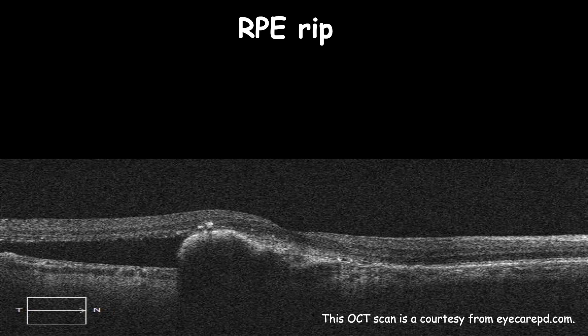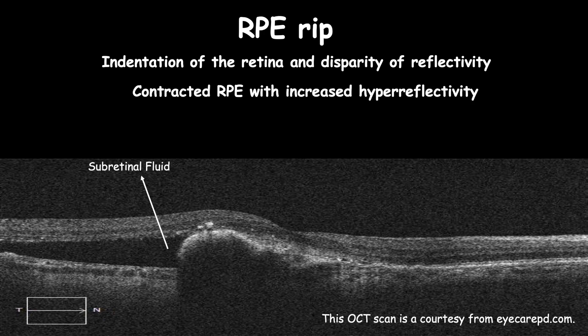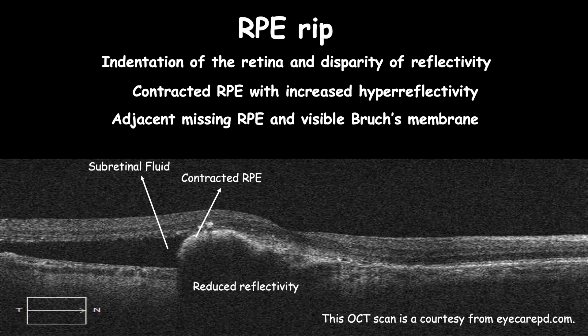On OCT, the RPE tear will show increased hyperreflectivity in the area of contracted RPE, with underlying shadowing that hinders the choroidal view. In contrast, in the area where RPE is ripped off, Bruch's membrane is visible and increases the visibility of the underlying choroid.